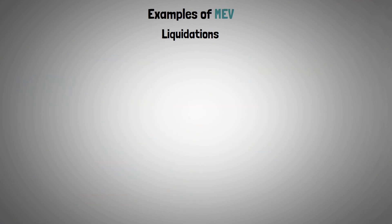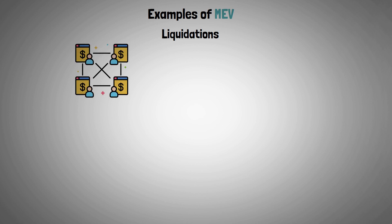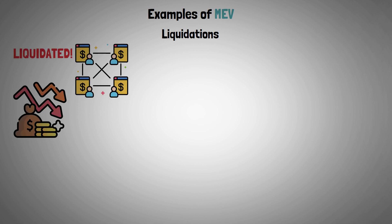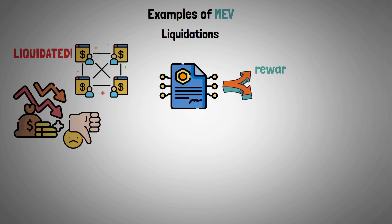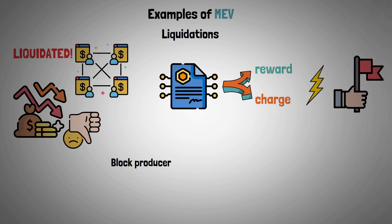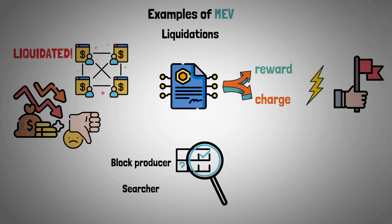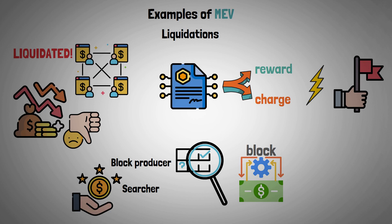Liquidations: a DeFi position may be liquidated if the market shifts and the collateral's value falls below a specific level. The involved smart contracts frequently reward the transaction that initiates the liquidation. Any block producer or searcher can identify this type of transaction and add their own liquidation transaction to the block before anyone else, capturing the reward value.